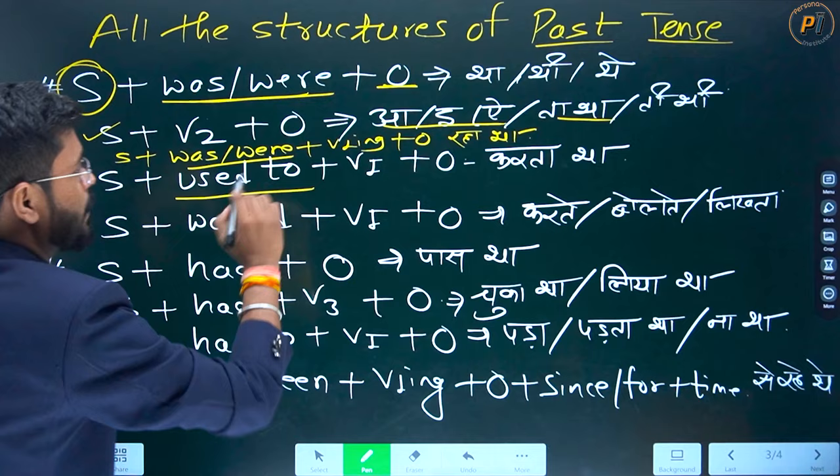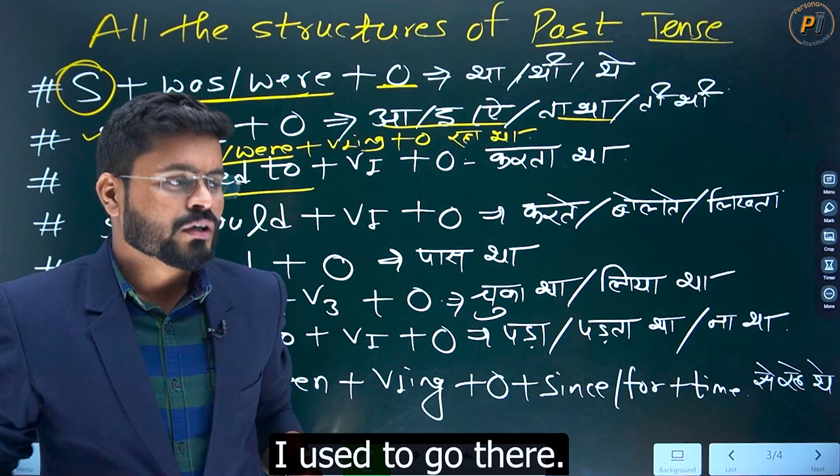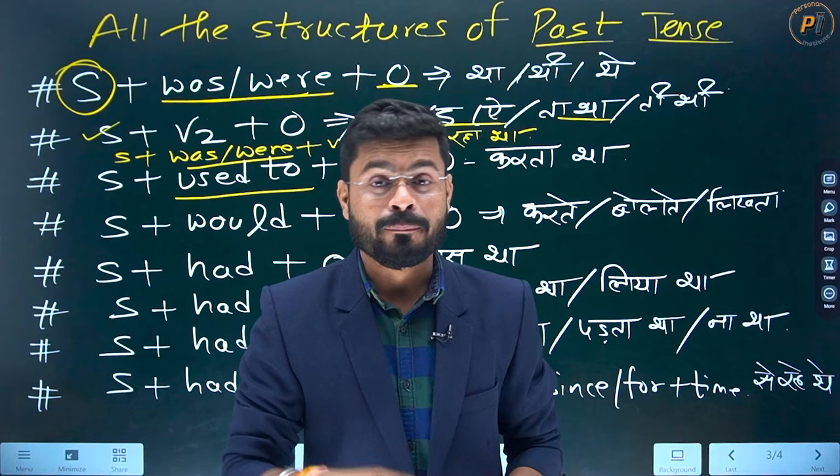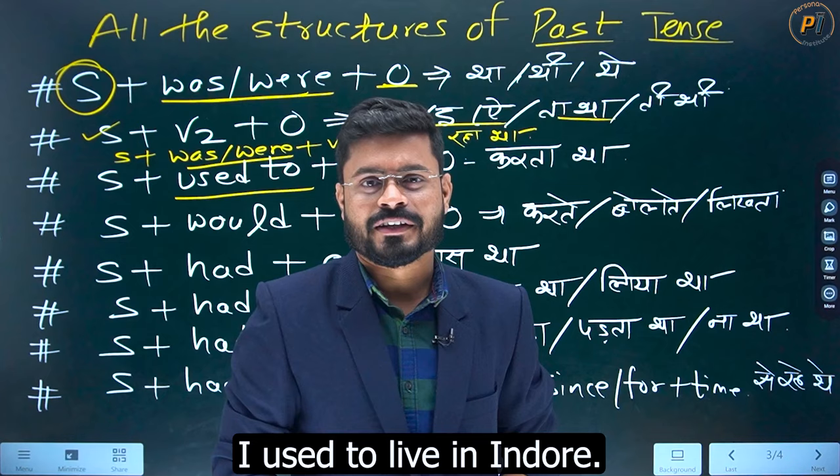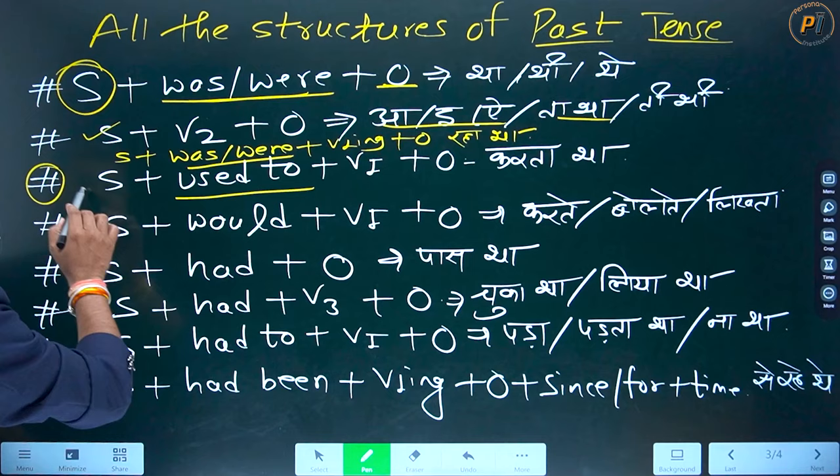Next — jab aap koi kaam kiya karte the. Maine wahaan jaya karta tha — I used to go there. Maine bahut hi masti kiya karta tha mere bachpan mein — I used to do so much mischief in my childhood. Maine Indore mein raha karta tha — I used to live in Indore. Maine use padaya karta tha — I used to teach him. Maine uski madad kiya karta tha — I used to help him. Jo bhi kaam aap kiya karte the, uske liye aap 'used to' laga lo.